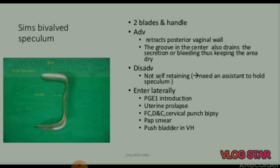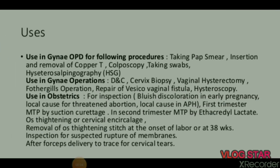Indications for Sims bivalve speculum include uterine prolapse, cervical punch biopsy, pap smear, and pushing bladder in vaginal hysterectomy. Uses in gynae OPD: taking pap smear, insertion and removal of copper T, colposcopy, taking swabs, and hysterosalpingography. Uses in gynae operations: D&C, cervix biopsy, vaginal hysterectomy, Fothergill's operation, repair of vesico-vaginal fistula, and hysteroscopy.